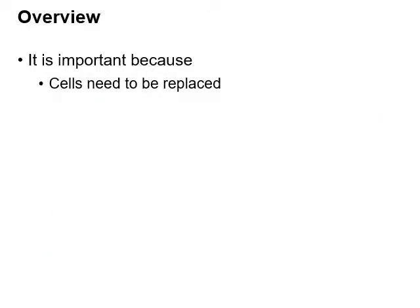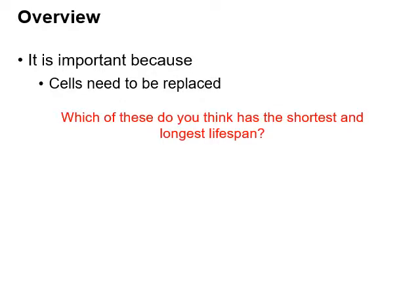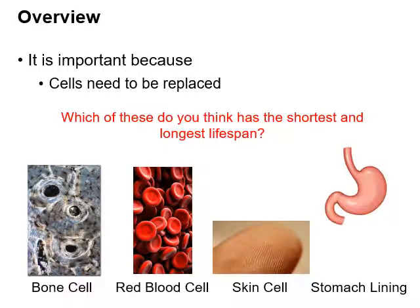Cells need to be replaced — the cells inside your body right now are not the same cells you've had your entire life. Think about these different types of cells: bone cells, red blood cells, skin cells, and cells that line the inside of your stomach. Which of these do you think would have the longest lifespan and which would have the shortest?